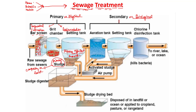In biological treatment, the primary effluent is pumped into aeration tanks. Aerobic microbes — aerobic bacteria and fungi — are present, and air is pumped into this aeration tank to allow vigorous growth. Through this vigorous growth of bacteria and fungi, they form a mesh-like structure known as flocs, which are formed by fungal filaments and bacterial cells.